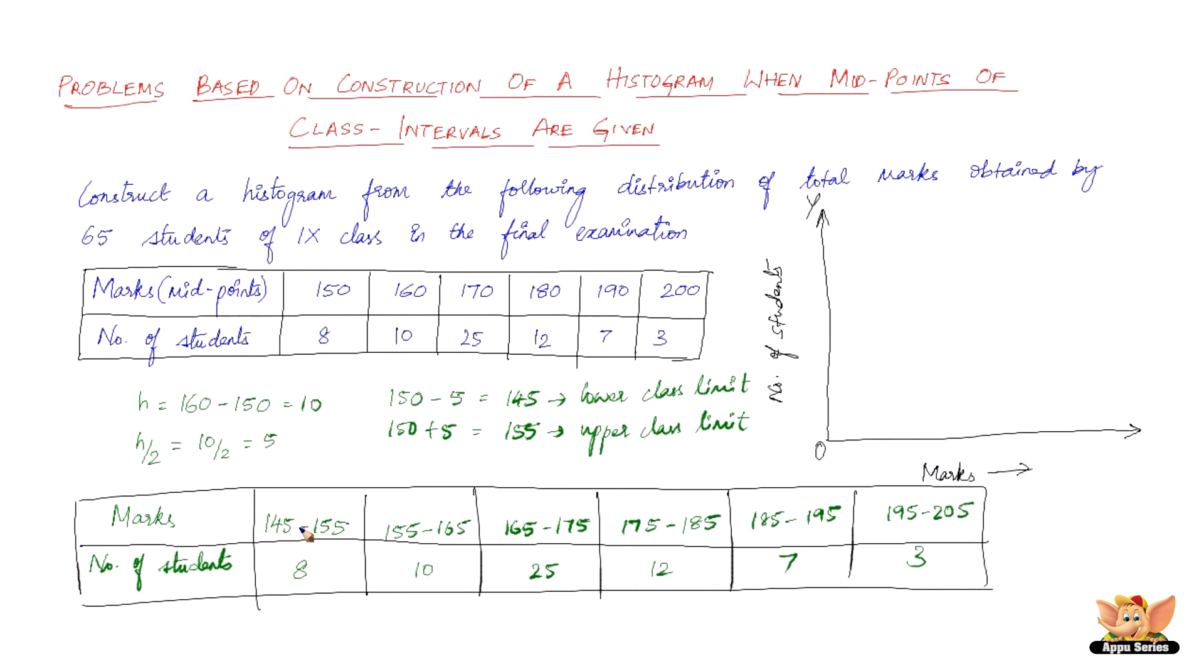The x-axis starts from 145. So this is the mark that we have to show: 145, 155, 165, 175, 185, 195, and 205. The number of students.